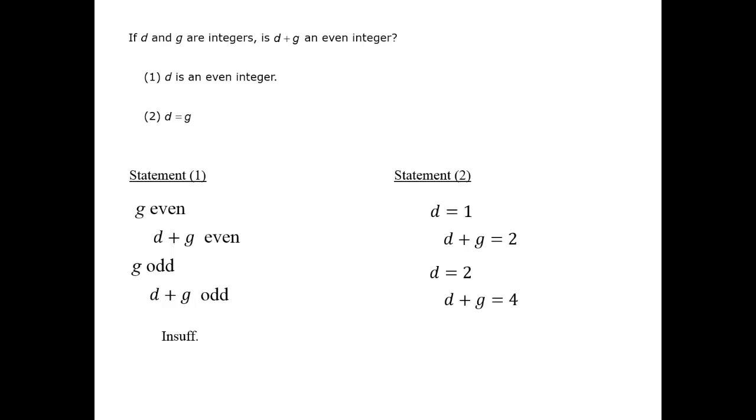Furthermore, we can note by algebra that since d equals g, then the sum of the two is the same as 2d or 2g. And that means the sum will always have two as a factor, since it's two times the variable. Having two as a factor is the definition of an even number, so it means that the sum will always be even.